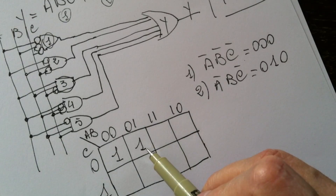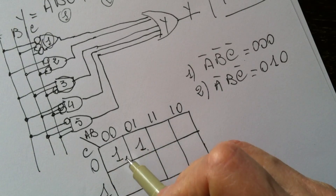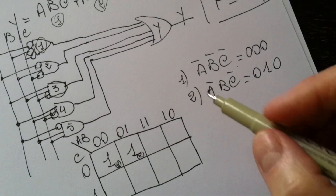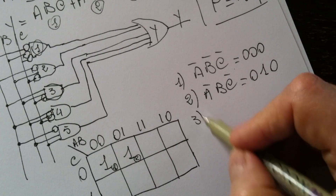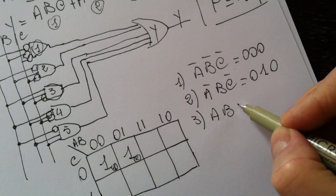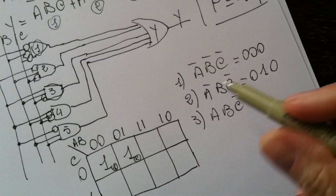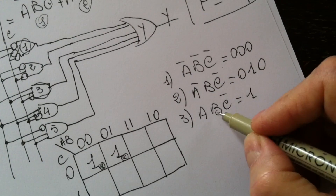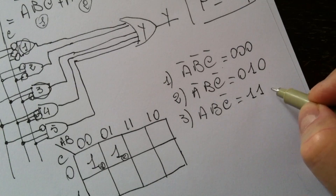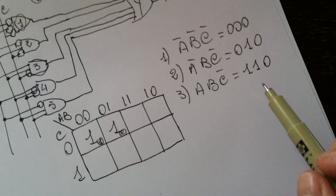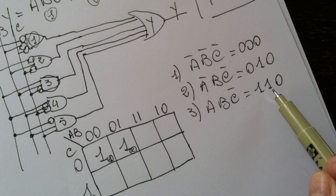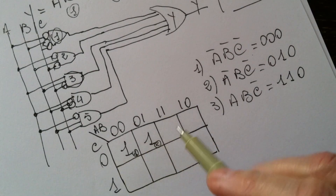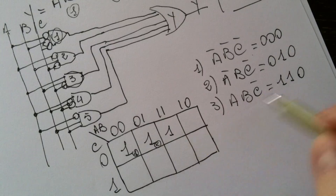So we have the first and second slots filled. For the third term it is A, B, NOT C, so the values are 1, 1, 0. We write it in the third slot, which corresponds to A=1, B=1, C=0.